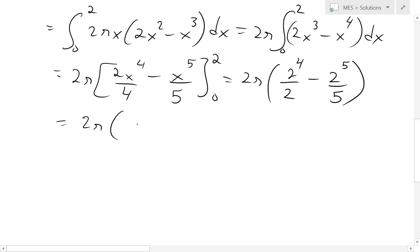So we'll get 2 pi. This is going to be right here, 2 to the 3, minus 2 to the 5 over 5.